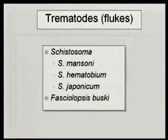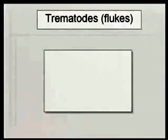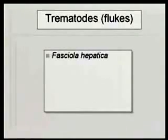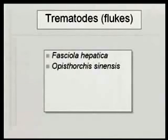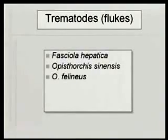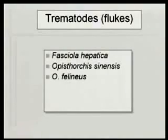The other flukes include fasciolopsis buski, fasciola hepatica — the liver fluke, which you may have seen pictures of and read about in biology. Opisthorchus sinensis are the fish flukes, and canines like cats or dogs are reservoirs for that.